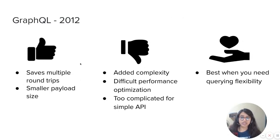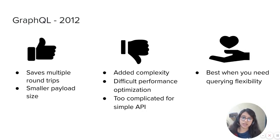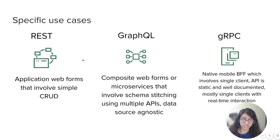Coming to GraphQL: it saves multiple round trips and has smaller payload size. But coming to disadvantages, it has added complexity, difficult performance optimization, and it's too complicated for simple APIs. It's considered best when you need querying flexibility.